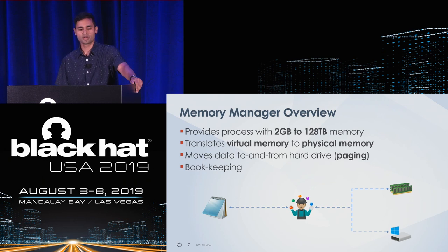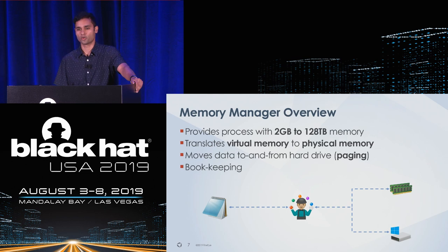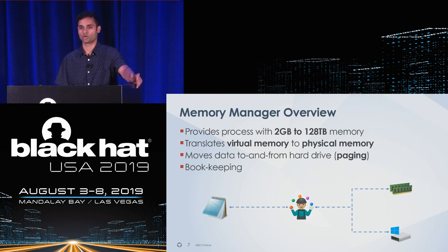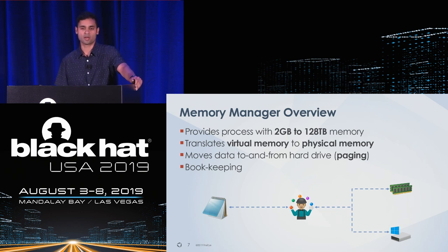Brief overview of the memory manager: any time you launch a process in Windows, that process gets anywhere between two gigabytes to 128 terabytes of memory to work with, depending on your Windows configuration and version. It's the memory manager's job to translate that virtual memory back into physical memory — memory on your RAM sticks. The memory manager is also responsible for moving data to and from the hard drive, which is an operation called paging. A lot of bookkeeping happens to support performance optimizations.